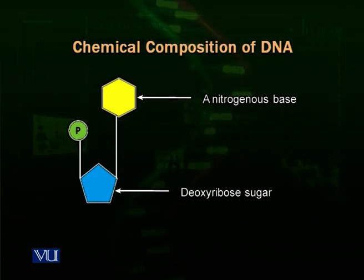Looking at the diagram, it shows a deoxyribose sugar — a five-carbon sugar — whose five corners represent its five carbons. On its left is a phosphate group and on its right is a nitrogenous base which is a six-carbon structure. This is the structure of a single nucleotide.